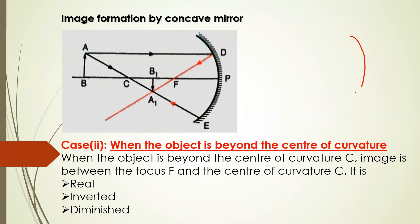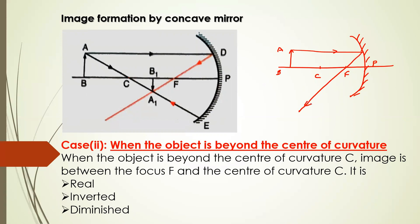You have to draw the principal axis, mark the pole, then the focus and center of curvature. The object AB is beyond the center of curvature. Now I am taking two rays from the convenient rays. First ray is taken parallel to the principal axis. After reflection, it is going to pass through the focus — this is your first reflected ray.